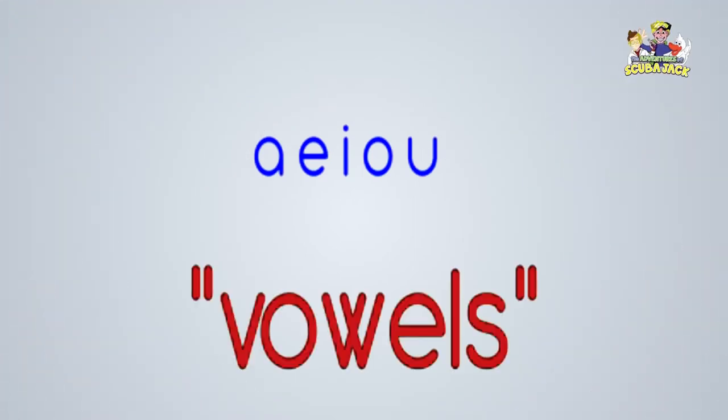The letters A, E, I, O and U are called vowels. Sometimes the letter Y acts like a vowel too. Let's look at some pictures and find the missing vowel in each word.